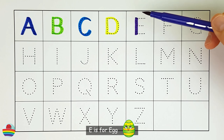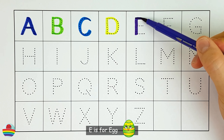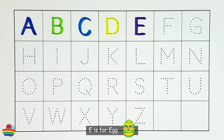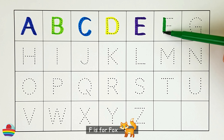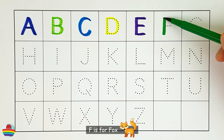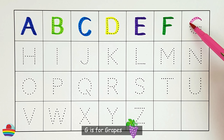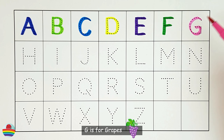E. E is for egg. E. F. F is for fox. F. G. G is for grapes. G. H. H is for house. H.